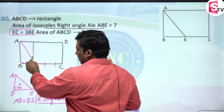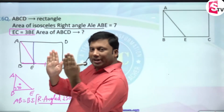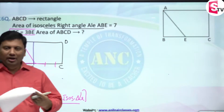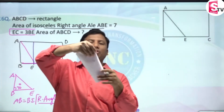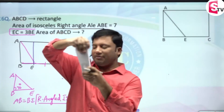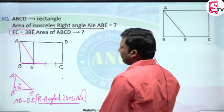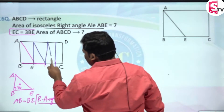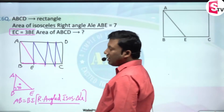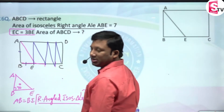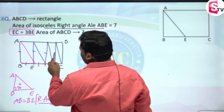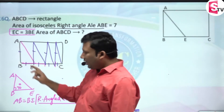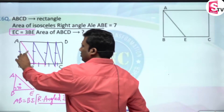Starting from AB, keep on folding the paper. If I keep on folding the figure, I get an isosceles right-angled triangle each time. This and this are equal, then again this and this are equal, and this and this are equal. So if I have AB and BE, I will get the value of AE. These two are equal, so the third side will also be equal.